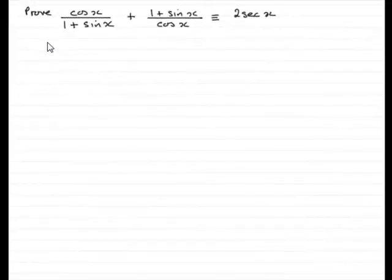Now for this part of the question we've got to prove that cos x over 1 plus sin x plus 1 plus sin x over cos x is identical to 2 sec x. So how are we going to do that?